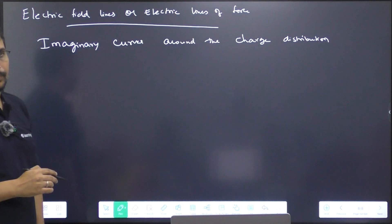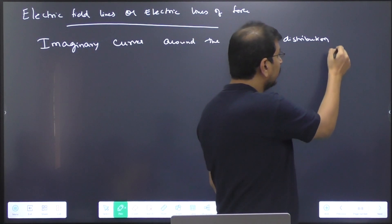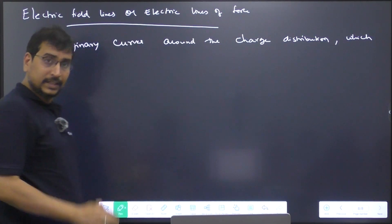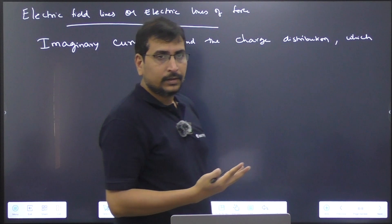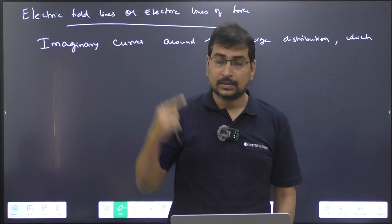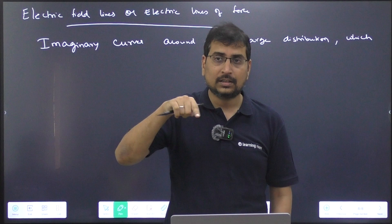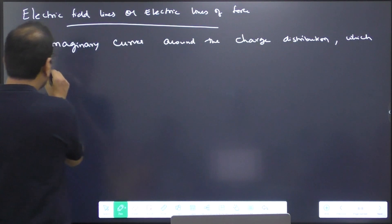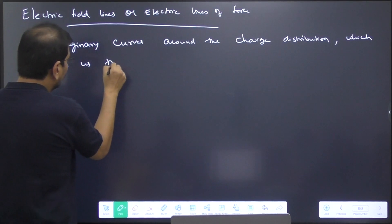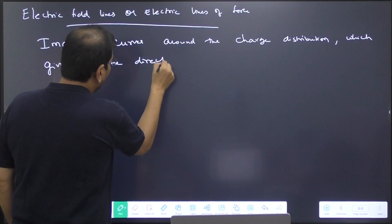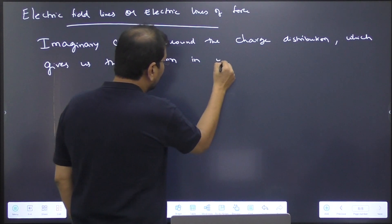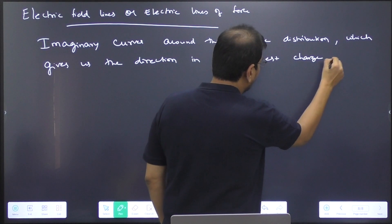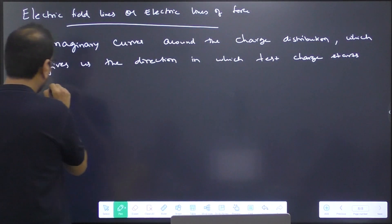Now, what do they signify? They give us the direction — the direction in which a test charge would start moving. So, electric field lines give us the direction in which a test charge starts moving.